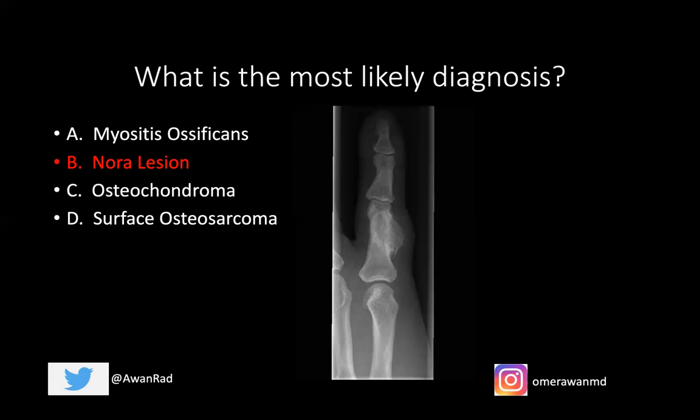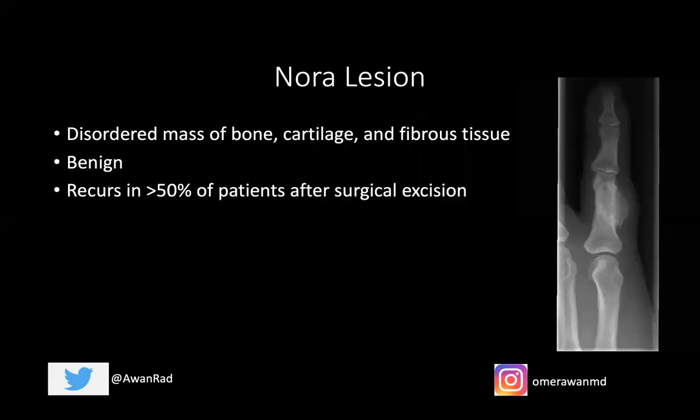This is just a benign lesion with no metastatic potential — a Nora lesion, or bizarre parosteal osteochondromatous proliferation — a disordered mass of bone, cartilage, and fibrous tissue. The treatment is surgical excision, but actually more than 50% of them can recur after surgical excision. So it's very important to monitor these after surgery to ensure it's not growing anymore.